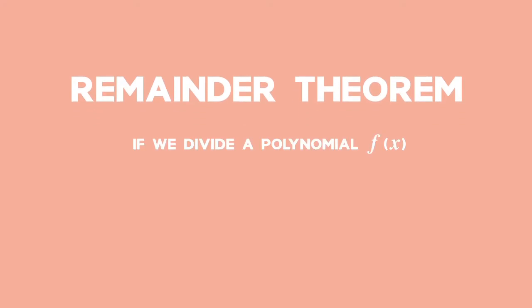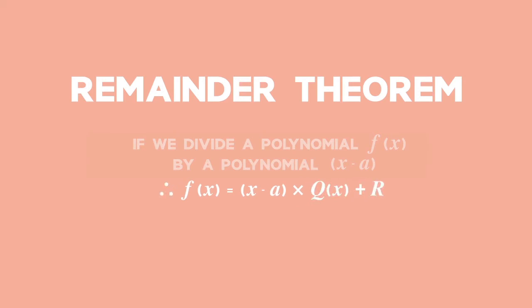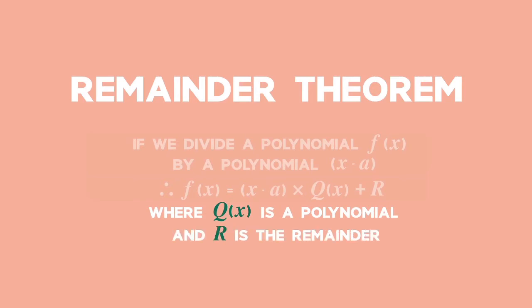The Remainder Theorem states that if we divide a polynomial f of x by a polynomial x minus a, we get a polynomial q of x and a remainder r. Therefore, f of x equals x minus a times q of x plus r, where q of x is a polynomial and r is the remainder.